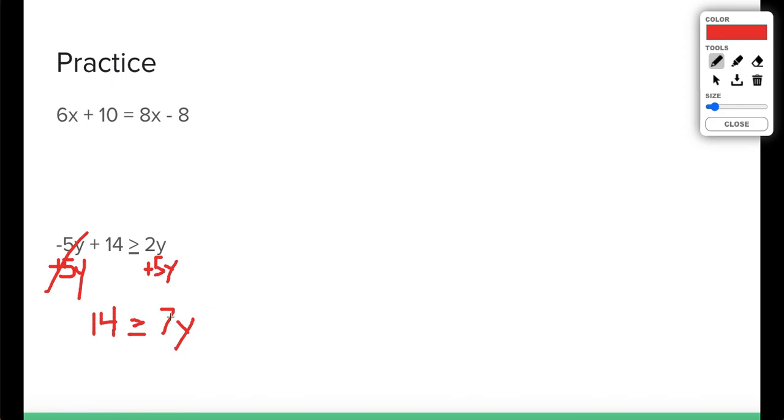To get y by itself, right now I have 7 times y, so I need to divide by 7. I get 14 divided by 7 is 2. That means 2 is greater than y, or the y has a less than part facing towards it, so y is greater than, or sorry, y is less than or equal to 2.